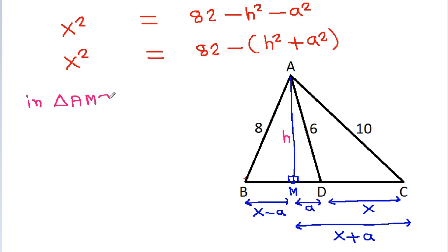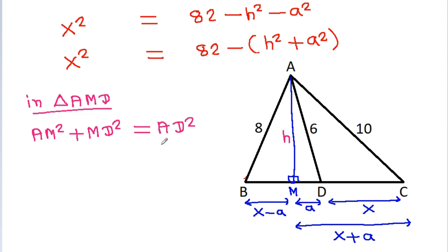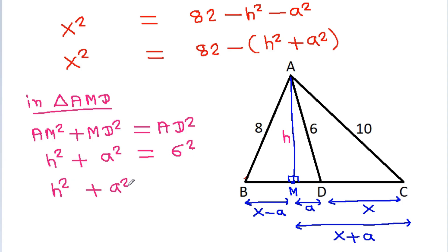In triangle AMD, AM square plus MD square equals AD square. So H square plus A square equals 6 square, which gives H square plus A square equals 36.